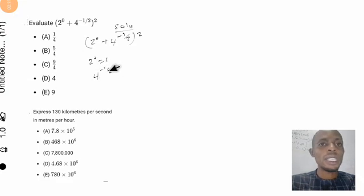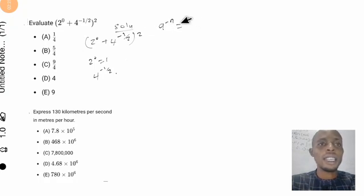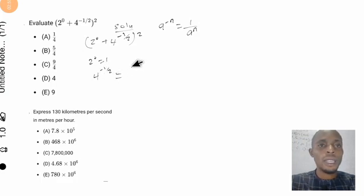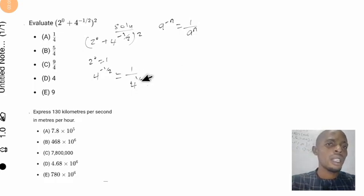Now for 4 raised to the power of negative one-half: a negative exponent means we take the reciprocal. The law states that a raised to the power of negative n equals one over a raised to the power of n. Comparing this with our expression, our base a is 4 and our n is one-half. So this becomes one over 4 raised to the power of one-half. According to the law of indices, the power of one-half is the same as taking the square root.